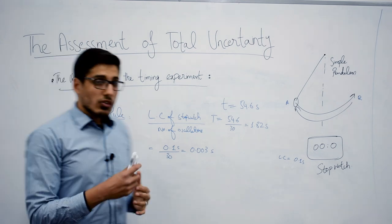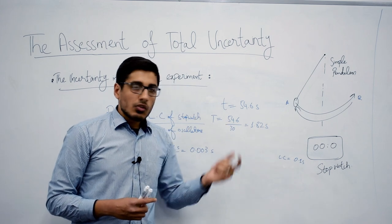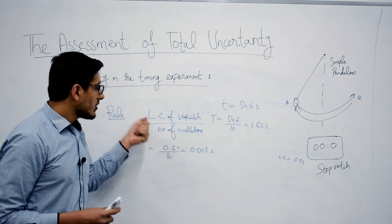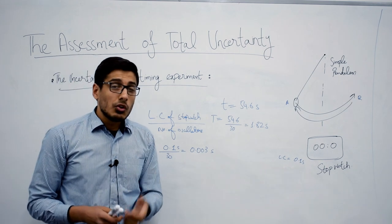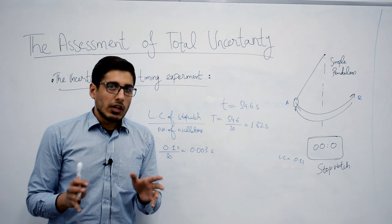So in timing experiments, to get more accurate results, you should take more and more oscillations time so that when you divide the least count by the number of oscillations, you get the least possible uncertainty in your result. In other words, your result is more accurate.